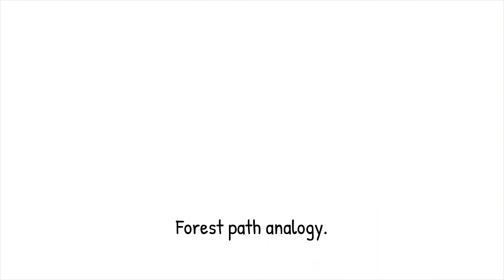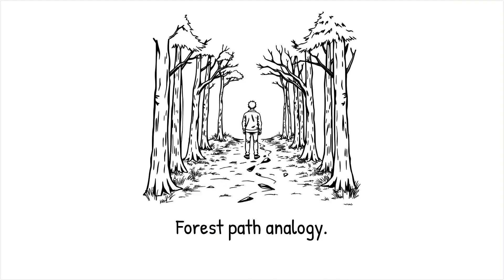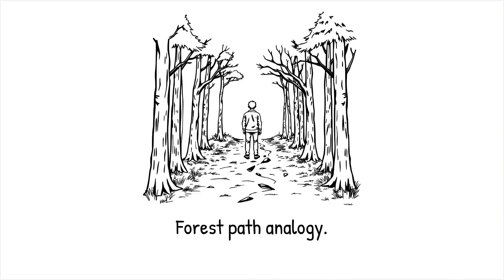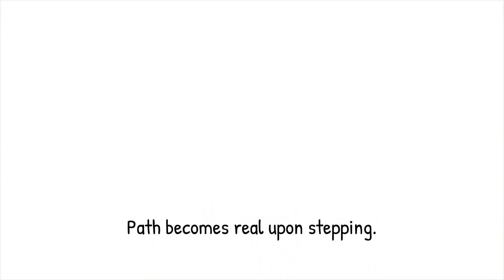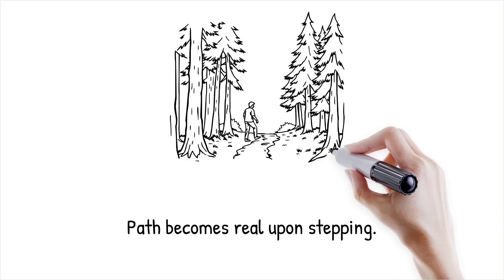Imagine choosing between two paths in a forest. Until you interact with the terrain—environment—all paths are potential options—superposition. The moment you step forward, one path becomes real—pointer state—guided by environmental constraints.